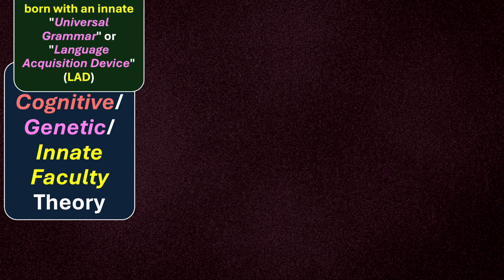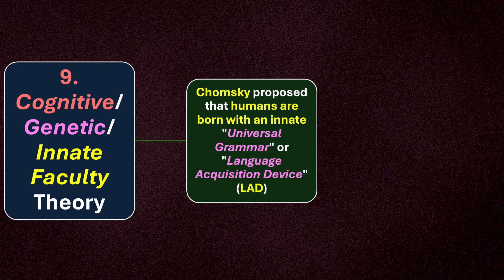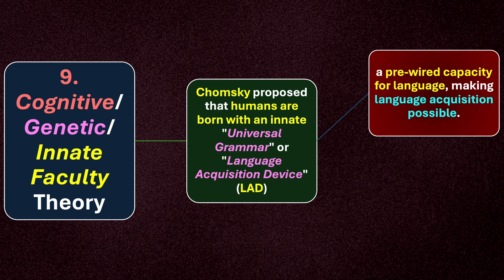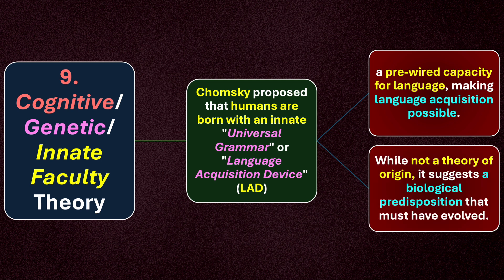That is point number nine: cognitive genetic theory, or innate faculty theory. Chomsky proposed that humans are born with an innate universal grammar, or language acquisition device — LAD — a pre-wired capacity for language making language acquisition possible. While not strictly a theory of origin, it suggests a biological predisposition that must have evolved. According to Chomsky, every human being has a language acquisition device in the brain that is innate and natural, and this inbuilt device caused language to happen.